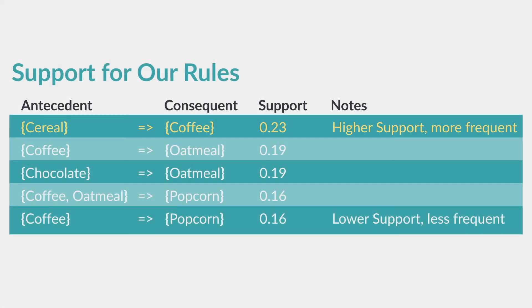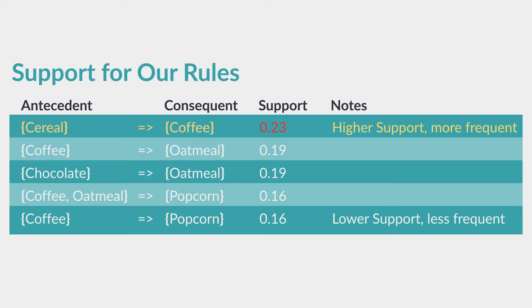We can calculate the support of different rules and put that in a table as well. The rule with the most support says if a customer has cereal in the cart, he will also put coffee in the cart. The support for this is 0.23, which means it occurs in 23% of our past transactions. The higher the support for a rule, the more frequent the combination is. By this measure, our cereal-implies-coffee rule is our best rule.